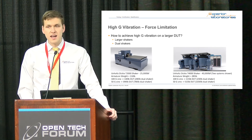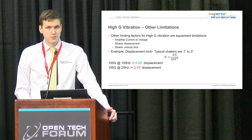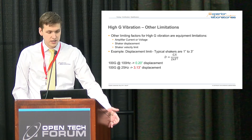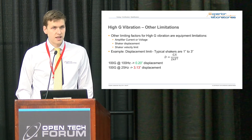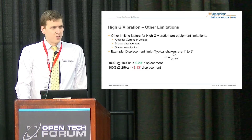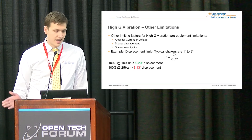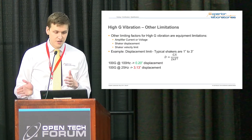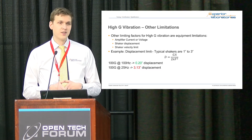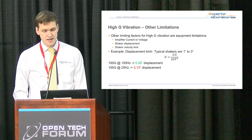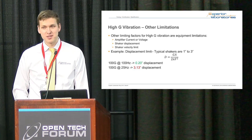The force pound rating is not always the only limiting factor for high G vibe. Other limiting factors include amplifier current and voltage, shaker displacement, and shaker velocity limit. Displacement and velocity come into play a lot for shaker shock and high G random testing. Most shakers are rated from about one-inch to three-inch peak-to-peak displacement. For example, running 100 G sine at 100 Hz gives about a fifth of an inch displacement, but at 25 Hz you have over three inches — which technically means we couldn't run it on any of our shakers.